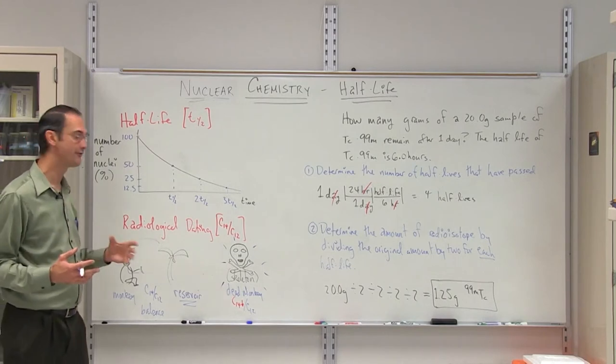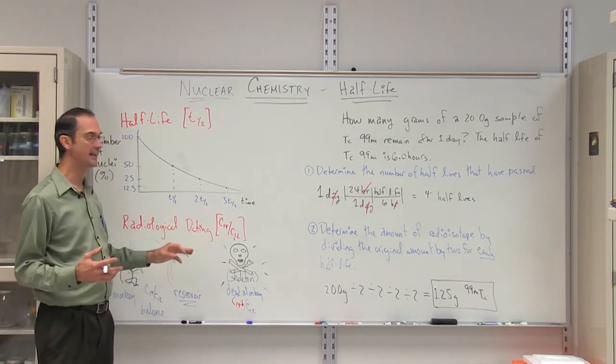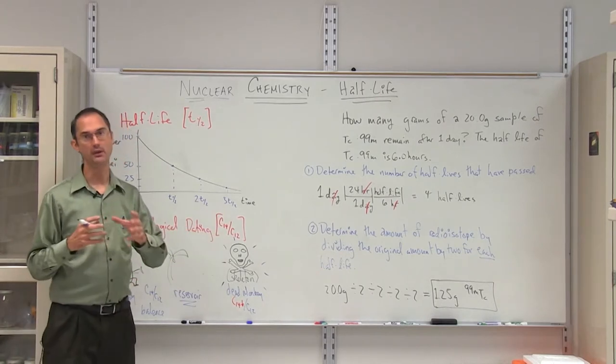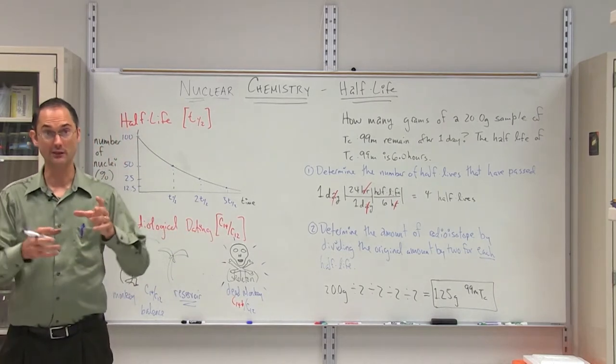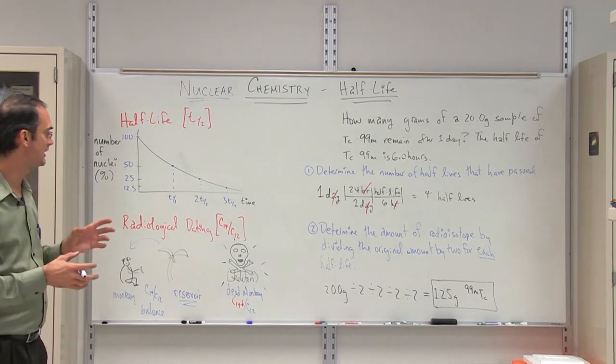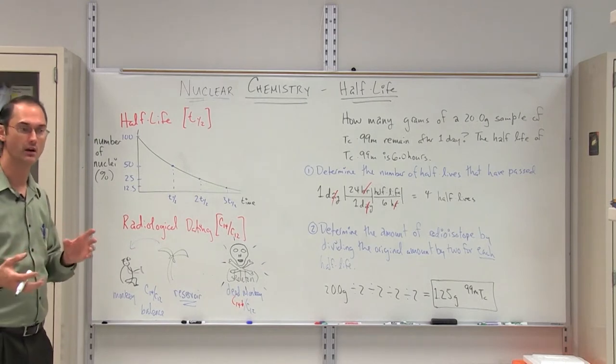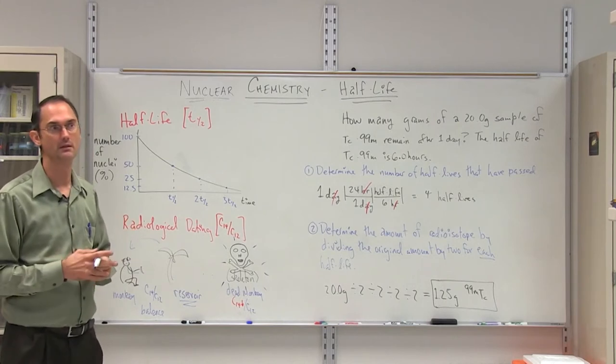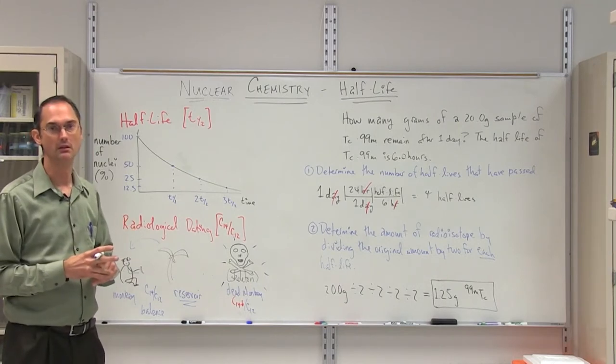An important application of half-life is the concept of radiological dating, and this has to do with the carbon-14, carbon-12 relative abundance on the earth. There is a relative abundance between these two where carbon-14 is a very small fraction of the carbon, on the order of parts per million or something of that type.